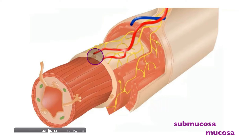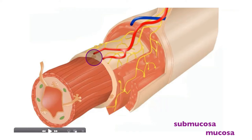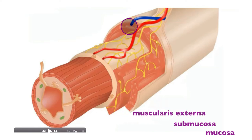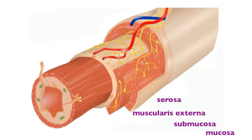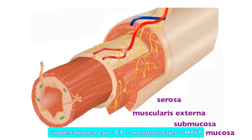If you were to slice this tube open and lay it flat, the submucosa would clearly be below the mucosa. The next layer in red is the muscularis externa, and outside that the tan area is the serosa. The mucosa is composed of simple columnar epithelial tissue, which makes up the great majority of the digestive tract — from the stomach down to the sigmoid colon — underlaid by loose areolar connective tissue known as the lamina propria.